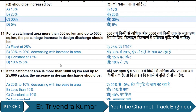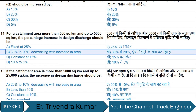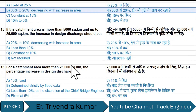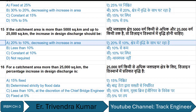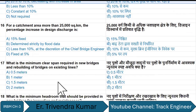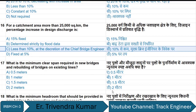For a catchment area more than 500 square kilometers and up to 5,000 square kilometers, the percentage increase in design discharge should be 30 to 20%, decreasing as area increases. If the catchment area is more than 5,000 square kilometers and up to 25,000 square kilometers, the increase in design discharge is less than 10%, at the discretion of the Chief Bridge Engineer.